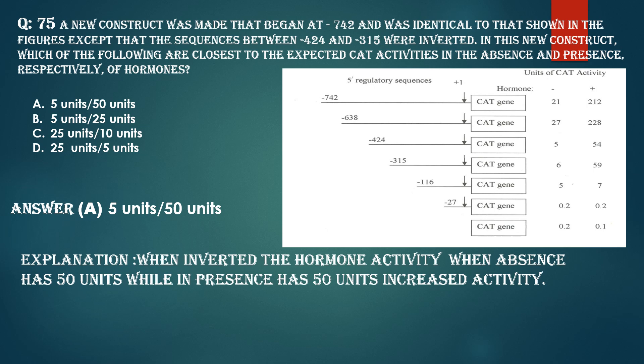When these inserts are inverted, then CAT activity is also inverted. Here, the inverted hormone activity when absence has 50 units. This will come here when inverted. In absence, it will have 50 units. In presence, it will have only 5 units. Answer is 5 units per 50 units.